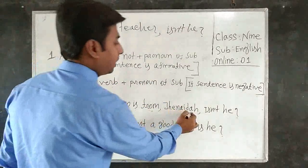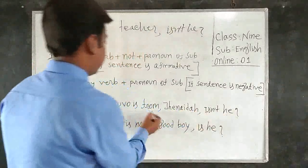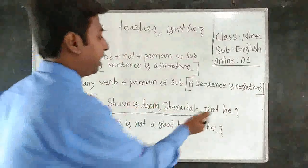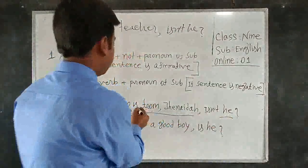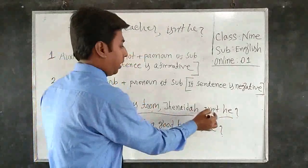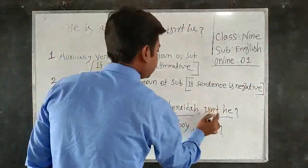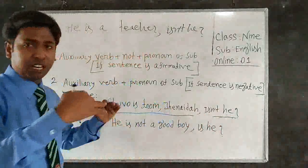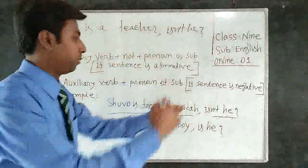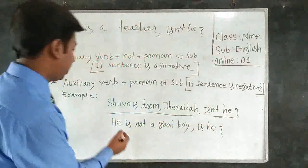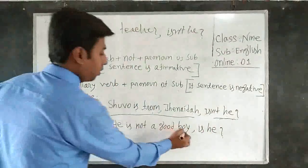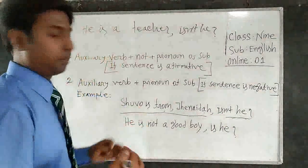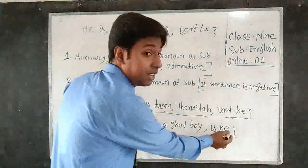For example: 'Shubha is from Zianaidah.' This statement is an affirmative sentence, so we use a negative tag: 'Isn't she?' If the statement is positive, we use a negative tag. Number two: 'He is not a good boy.' This sentence is a negative sentence, so we use an affirmative tag: 'Is he?'